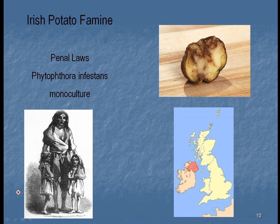On just a small amount of land, a farmer could grow potatoes, feed his entire family, and sell some on the marketplace to make money. This increased their standard of living. And because of the standard of living going up and less malnutrition, the Irish population increased threefold.